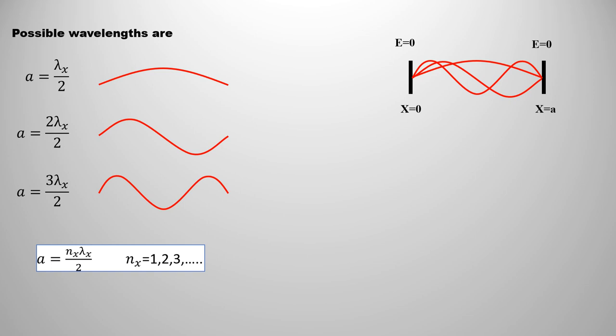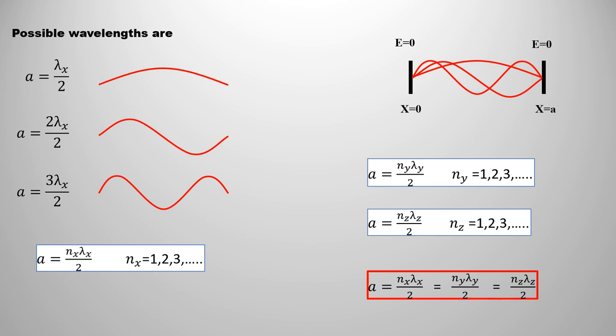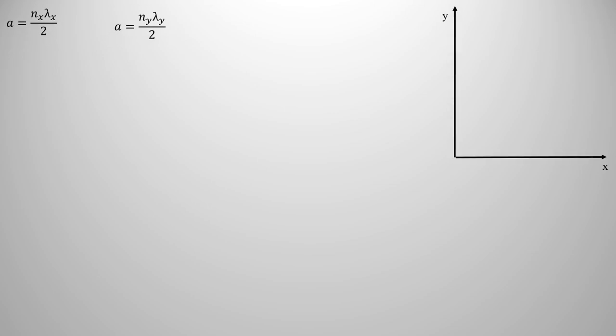In the same way, the length of the wave corresponding to the y and z directions will be n_y times lambda_y divided by 2, and n_z times lambda_z divided by 2. Here, n_x, n_y, and n_z represent the possible number of modes in all three directions. These are the waves that are in the x, y, and z directions.